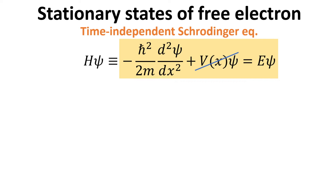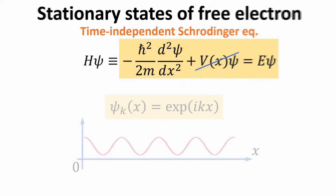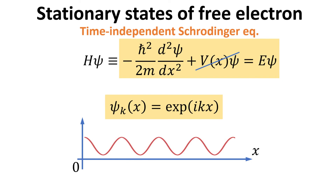For a free particle, the potential V would be zero. This is a simple second-order differential equation, whose solution is the complex exponential, or the plane wave as shown, where k is also called the wave vector. Since this wave function is extended in position x, it is therefore not normalizable. Such a wave function is therefore not physical.